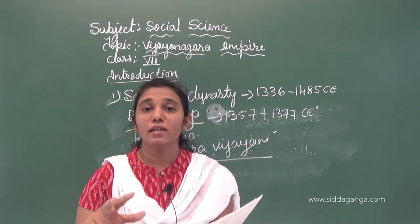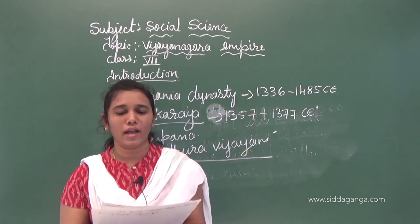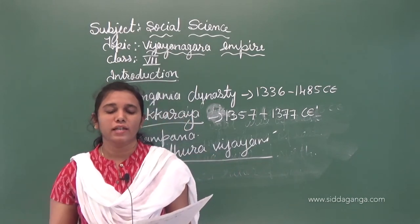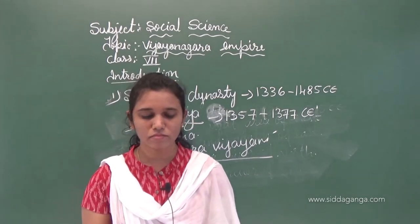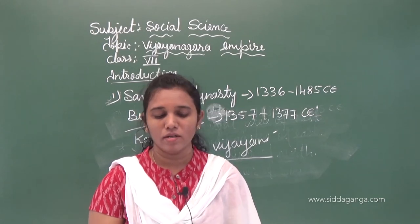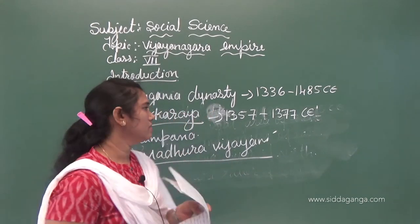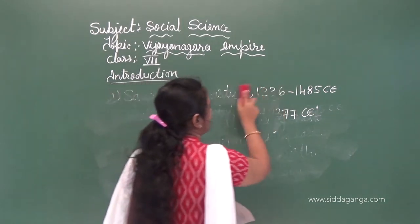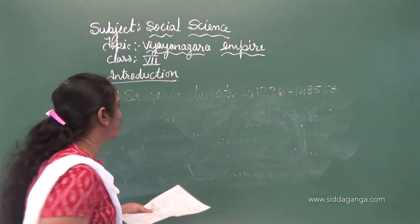After Bukkaraya, kings like Bukharaya 2nd, Virupaksha 2nd, Devaraya 1st, and Veeraraya also ruled the Vijayanagara Empire. Among the famous and strong kings, we now study about Proudha Devaraya, also known as Devaraya 2nd.